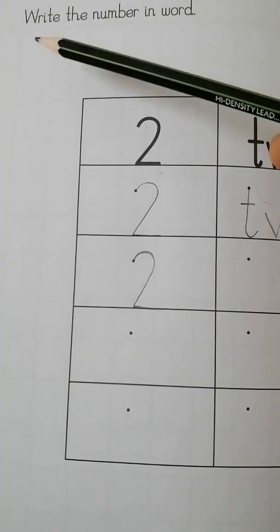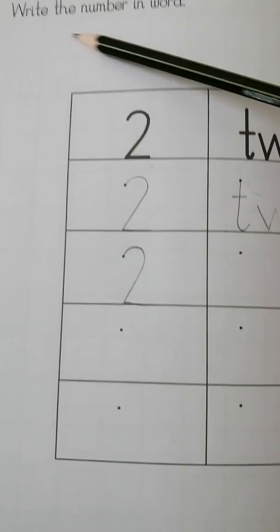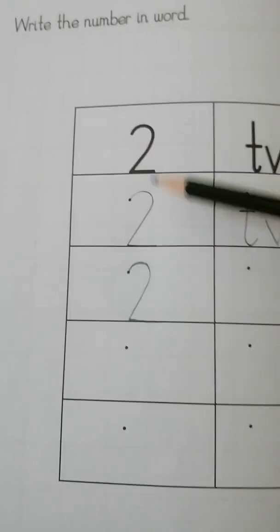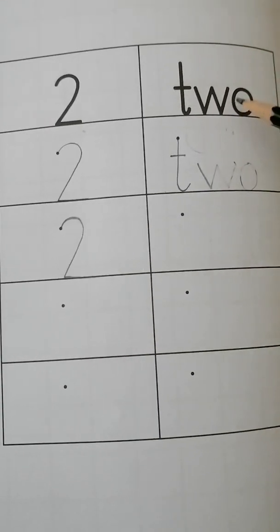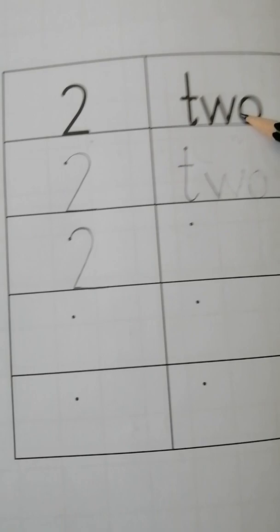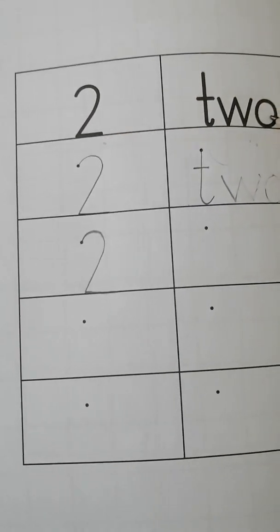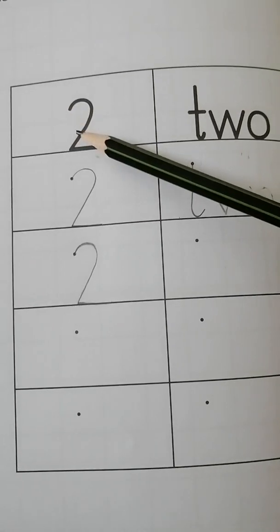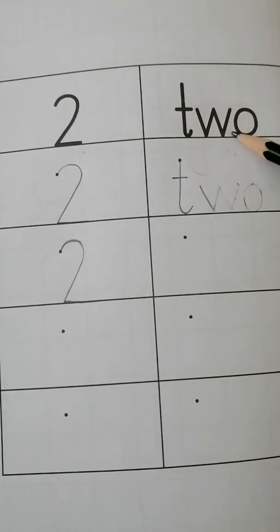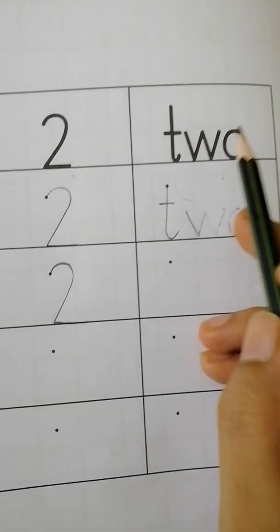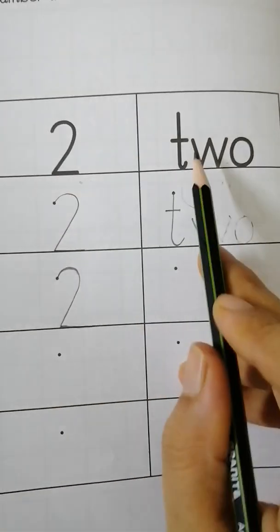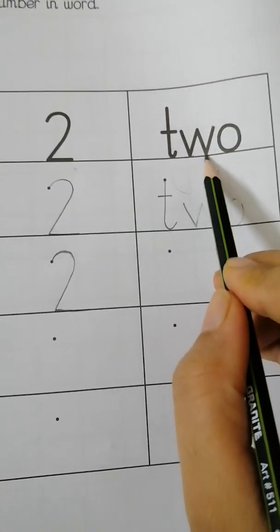This is your new page. Write the number in word. This is a number and this is a number in word — number and in word. Basically it's the name of a number. You start practice of the name of number and learn by heart.